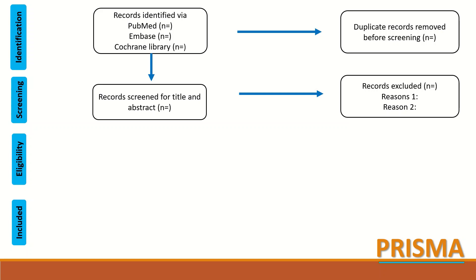Those that are not relevant will be excluded, and the reasons for excluding the records must be given — for example, whether the record was only a conference abstract or the language of the record is not English. The removed records must be counted and inserted in the appropriate box with reasons for exclusion.